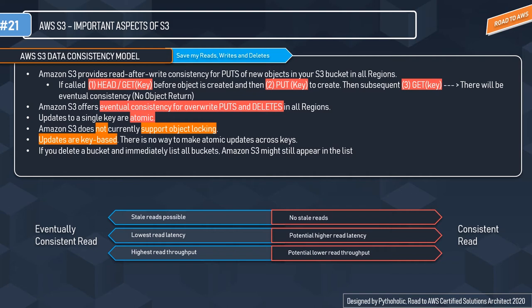If object locking is required, you will need to build that mechanism in your application. Buckets have a similar consistency model — if you delete a bucket and immediately send a GET request to list all buckets, you might still see it in the list.